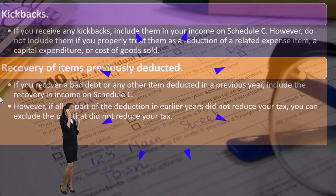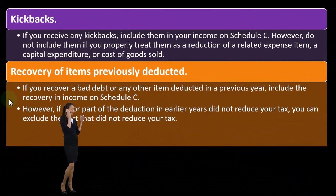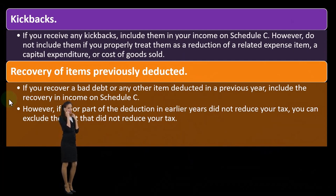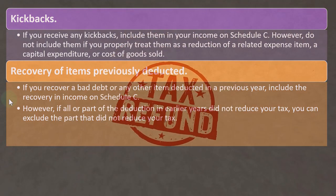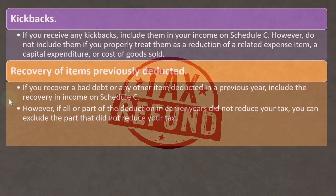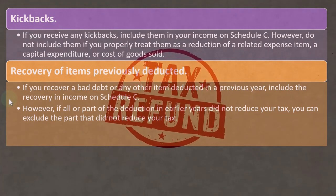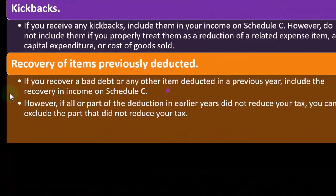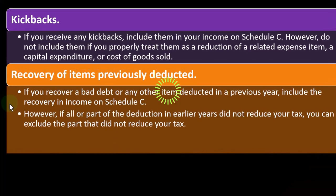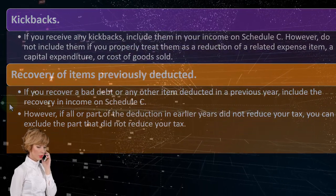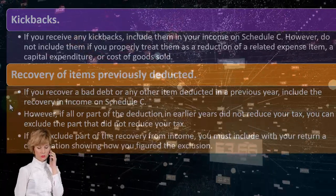However, if all or part of the deduction in an earlier year did not reduce your tax, you can exclude the part that did not reduce your tax. This is a similar scenario to state sales tax refunds, where tax preparers need to determine: did you get a deduction for the state sales tax? You would only have done that on Schedule C, for example. If you got a refund of the sales tax, the question is whether you got a benefit from that deduction last year, which determines whether you need to record it in income in the current year.